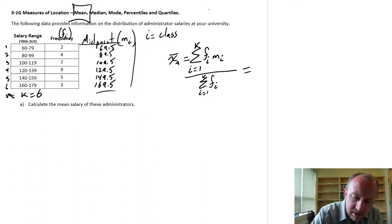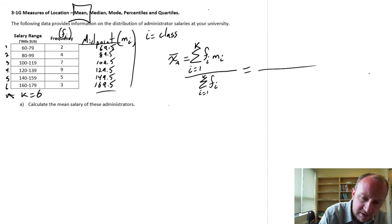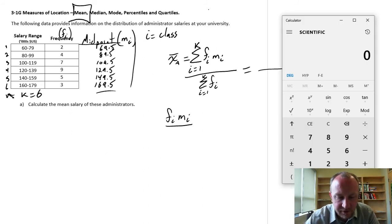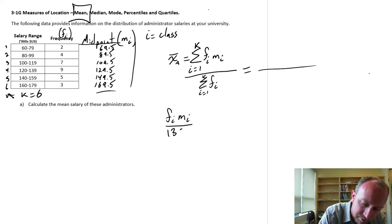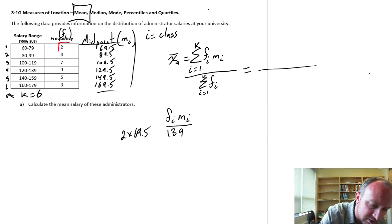Okay, so let's go through first and we'll calculate our numerator value. So I'll calculate all of these FI times MI values. For the first one, there's two observations in that class that have a midpoint of 69.5. So this is 139. This was 2 times 69.5. So here that was this first calculation.